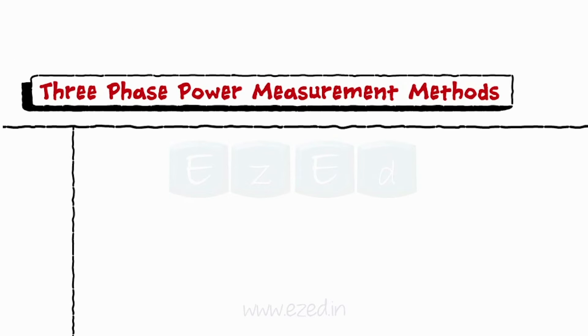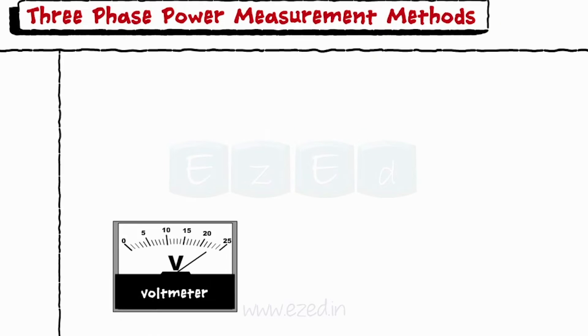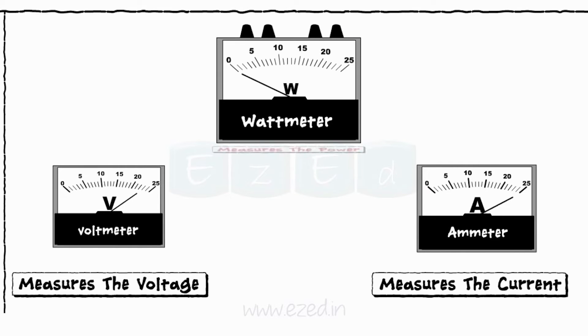We have a voltmeter to measure the voltage, an ammeter to measure the current, and a wattmeter is an instrument that measures power directly in watts.